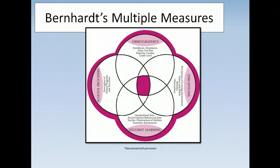For demographic information, consider whether your family and student demographic is changing, has been stable, or is about to change, and how you are prepared to deal with changes ahead of time. Is there consistent growth or decline in enrollment, and how does this affect transitions in your school? For perception data, what is the perception that families and students have of your school or district? Has that changed, and is there a need to transition them from negative to more positive perceptions?